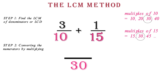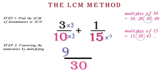Step 2: converting the numerators by multiplying. Our next step is to find what number multiplied by the first denominator gives the LCD. We know that the number is 3 — 3 multiplies 10 to give 30. We multiply the numerator by the 3, so we do 3 times 3, which equals 9. We do the same for the second fraction: we find out what number multiplied by 15 will give the LCD. We know that the number is 2. We multiply the numerator, which is 1, by the 2, to get 2.